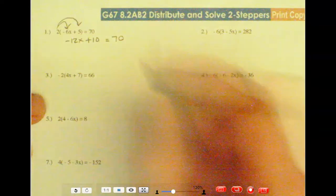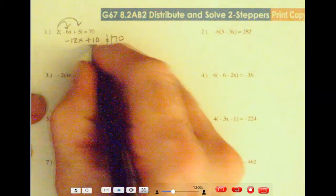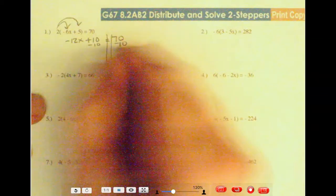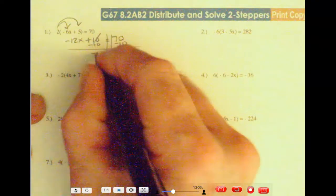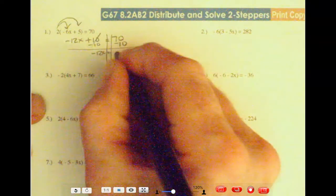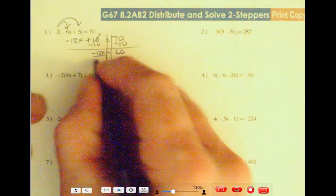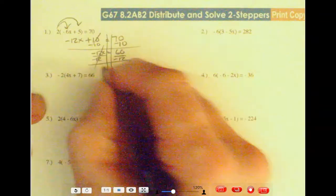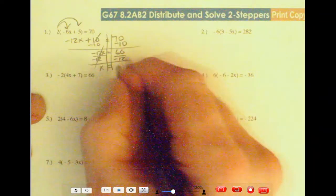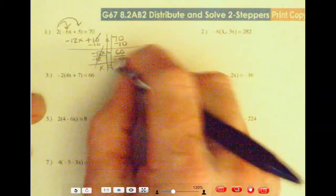Alright, so this is two-step equation time. My row tracks out. First of all, I'm going to subtract 10 from this side, I'm going to subtract 10 from this side. These cross off. I've got minus 12x equals 60. Now I'm going to divide by negative 12 on both sides. That's going to give me a positive x equals, not 4, 5.